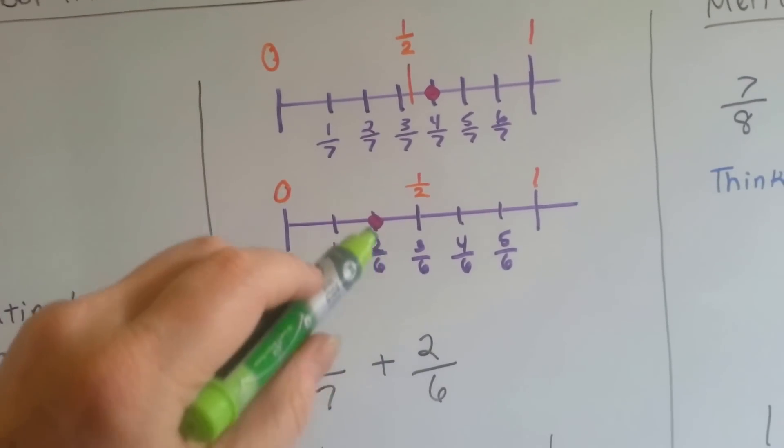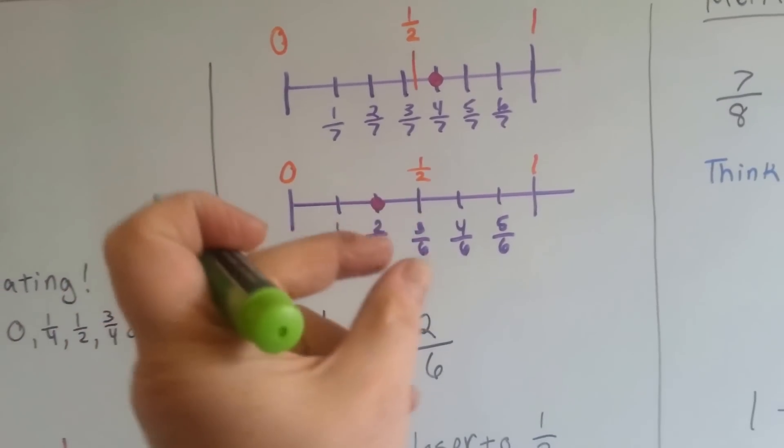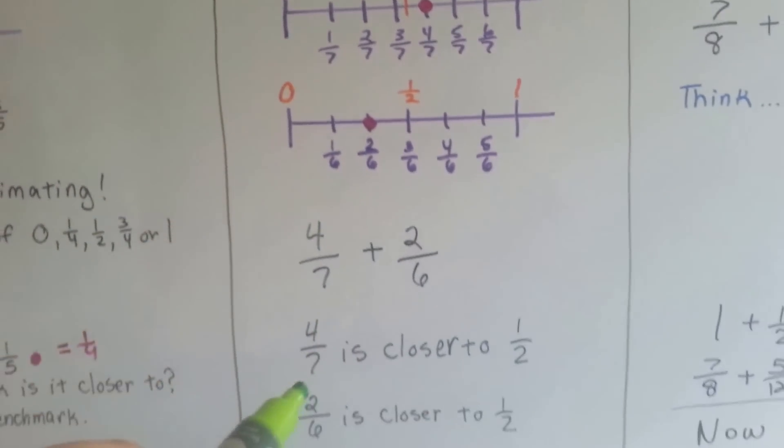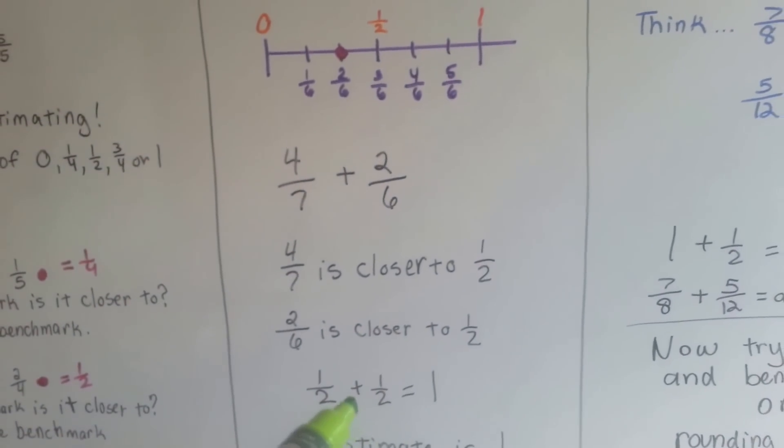And the 2 sixths is also closer to the half benchmark. See, it's closer here than it is here. That's farther away. So we're going to use a half and a half as our estimates.